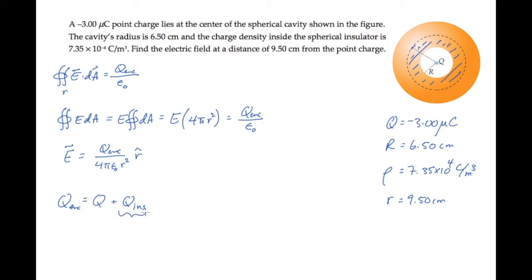Equal to the charge density times the hashed volume. That's rho times 4 thirds pi little r cubed minus big R cubed. We know all of these values, so we can substitute them and calculate, finding that there is 1.79 microcoulombs of charge in the hatched orange area.